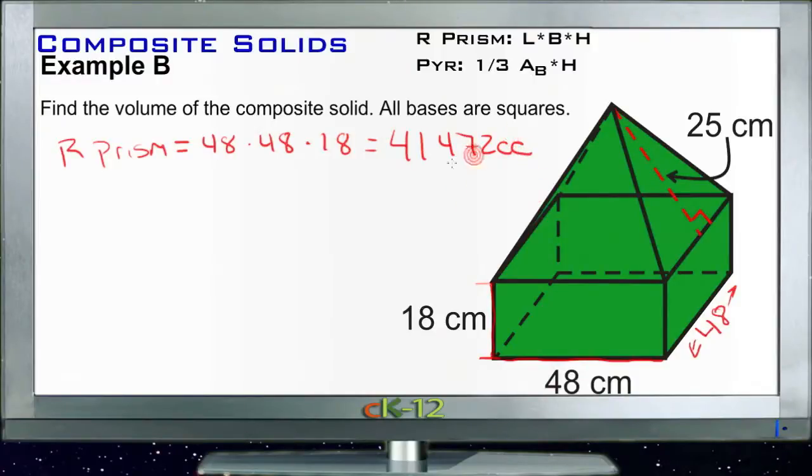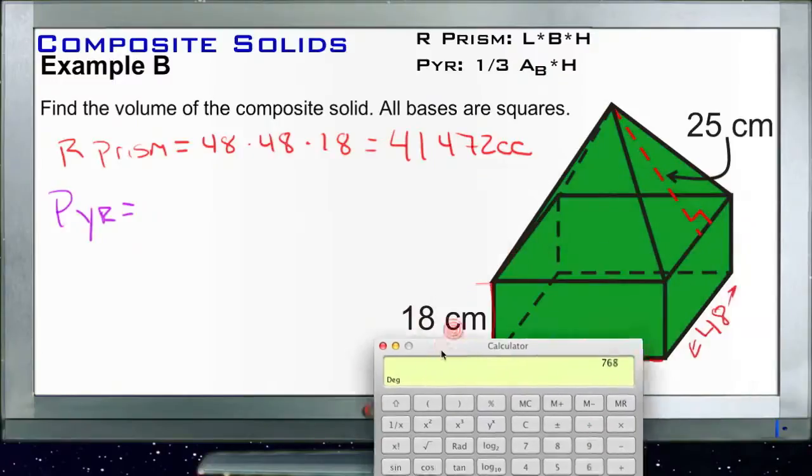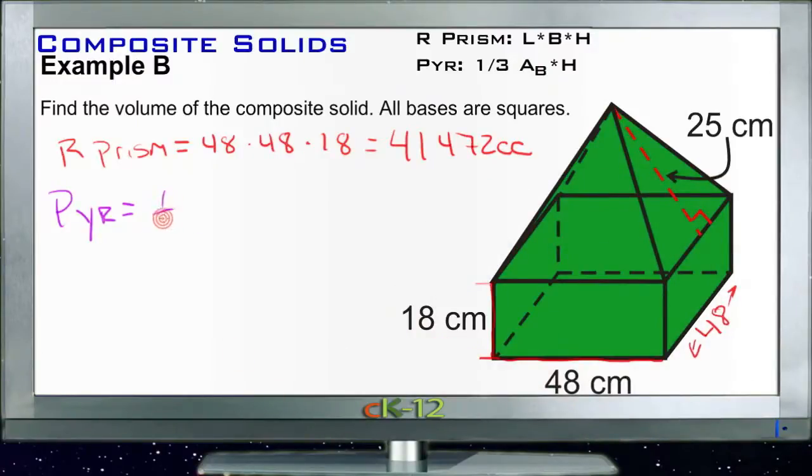And then our pyramid. Our pyramid is going to be one-third the area of the base times the height. So we have the area of the base is going to be the area of the top of our prism, so it's going to be that 48 squared. 48 times 48 is 2304, and we're going to take a third of that area of that base, so we'll have a third of 2304, which is 768. So we have 768 times the height. And unfortunately, we don't have the height yet.